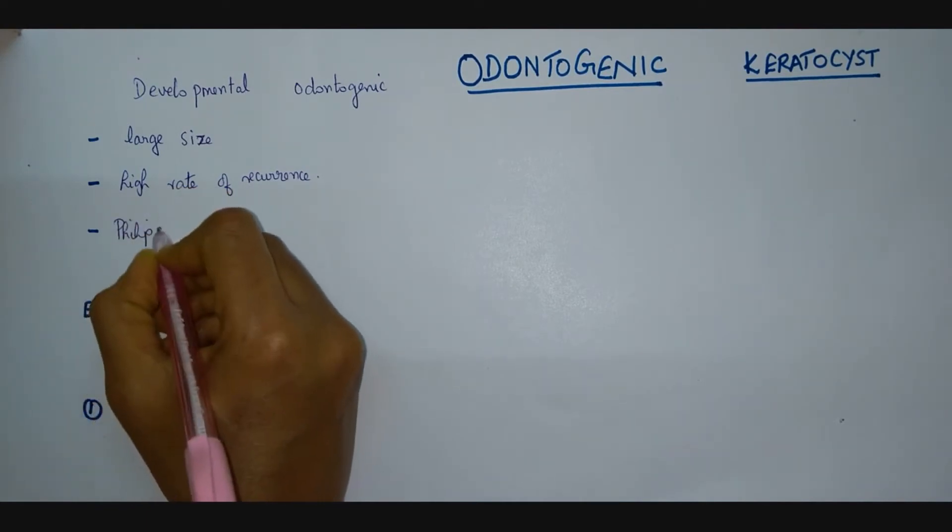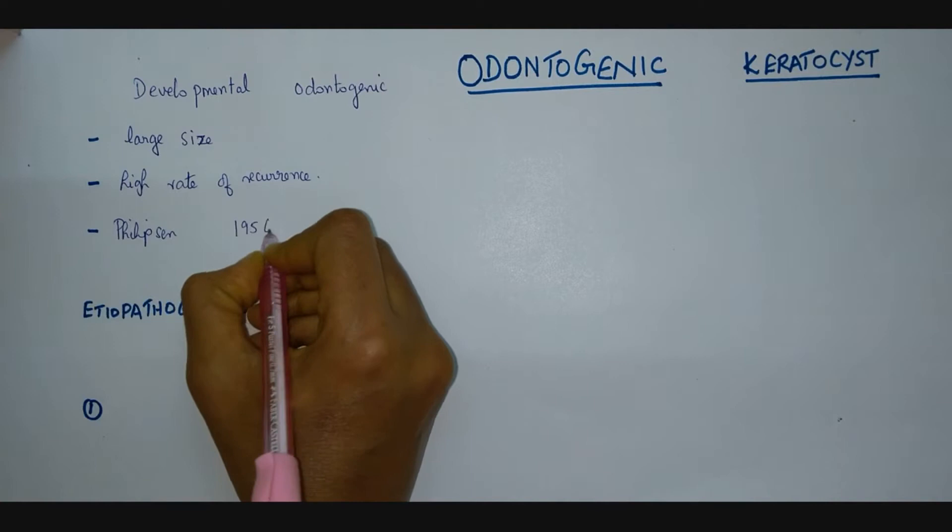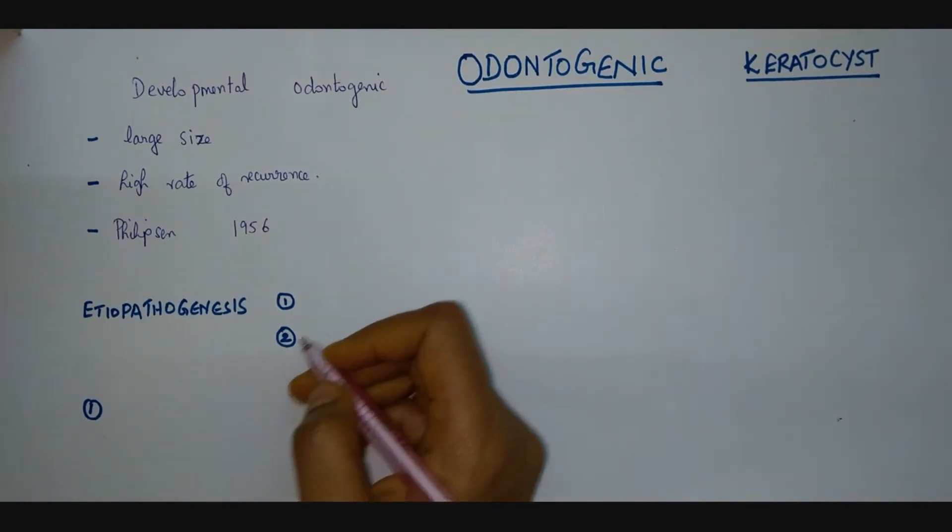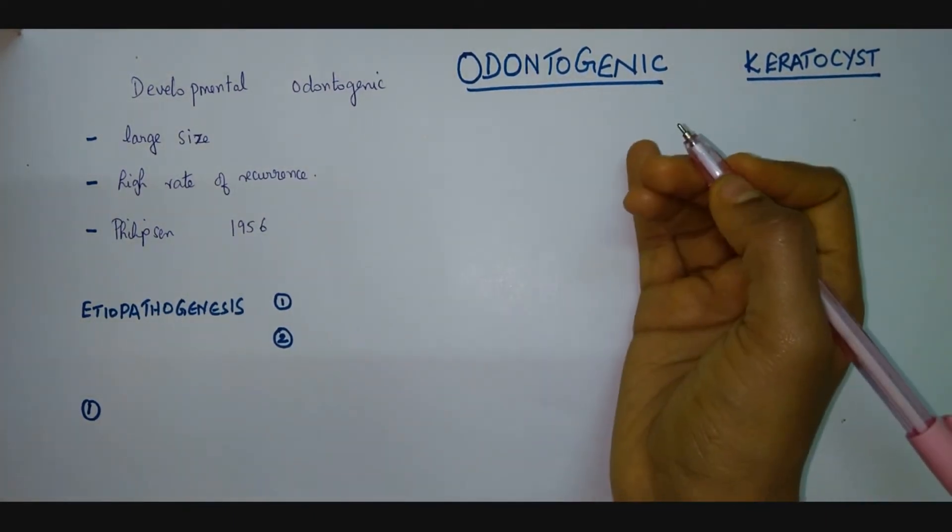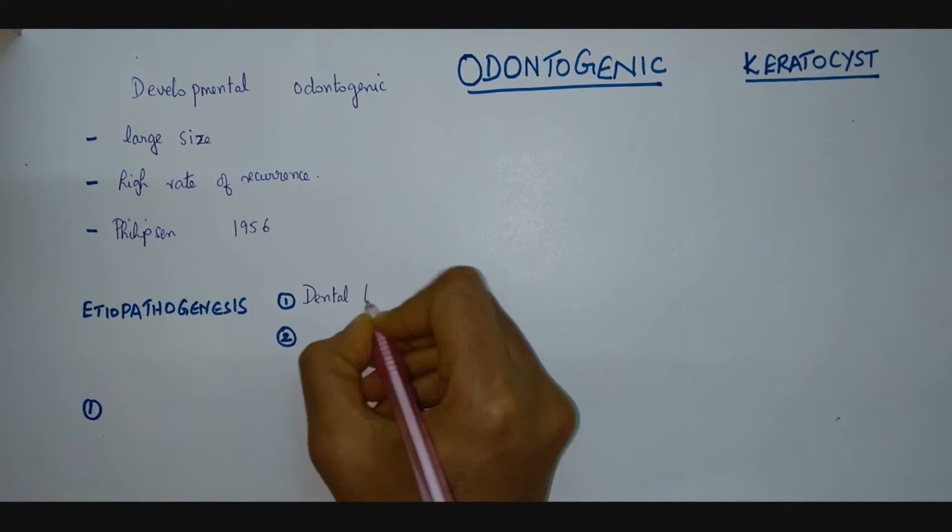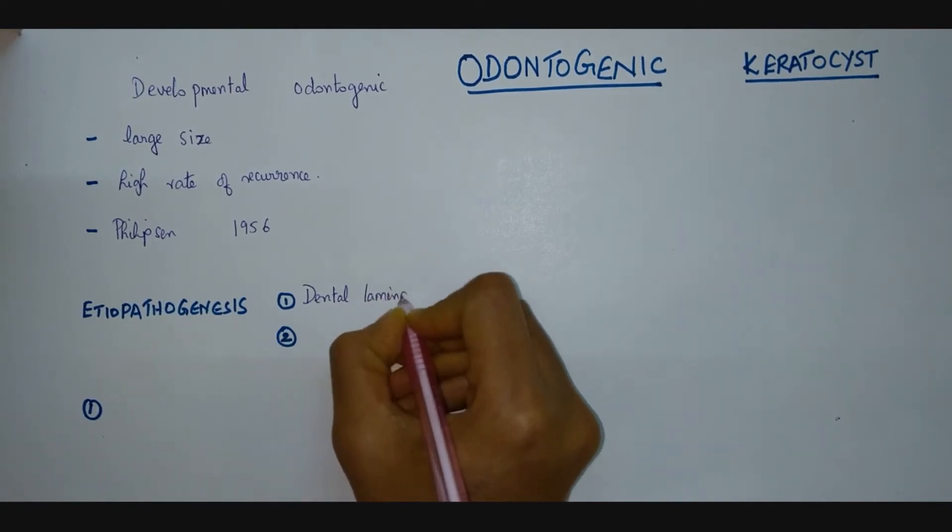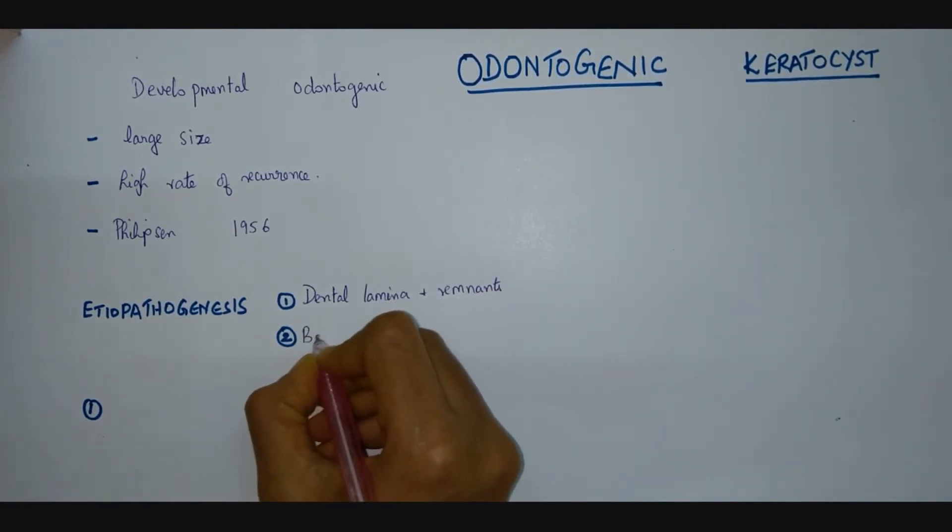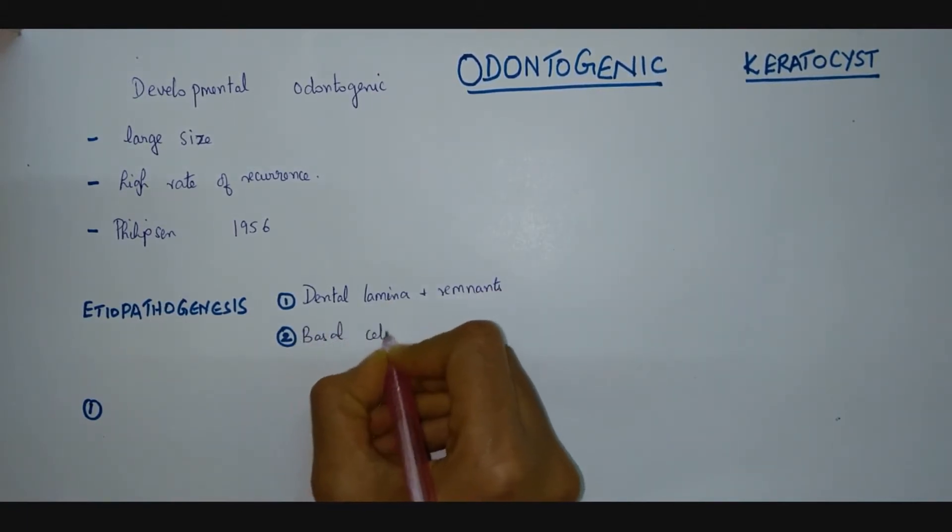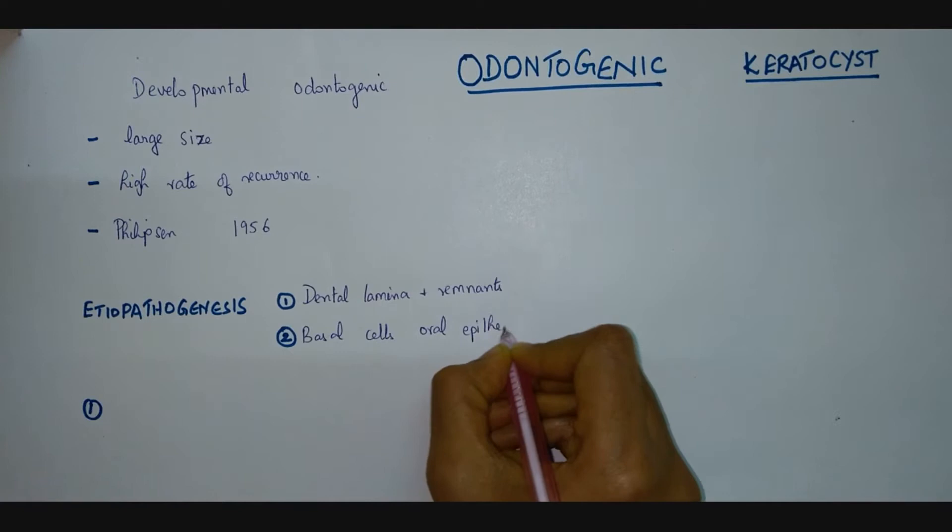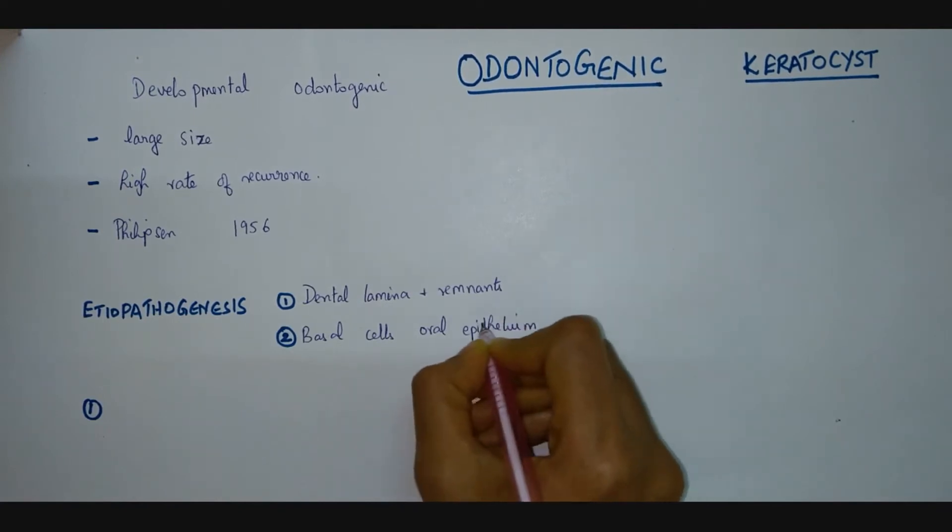Moving on to the etiopathogenesis of odontogenic keratocyst, two main sources have been suggested for the origin. The first is the dental lamina and its remnants, and the next source of origin are the basal cells of the overlying epithelium, oral epithelium.